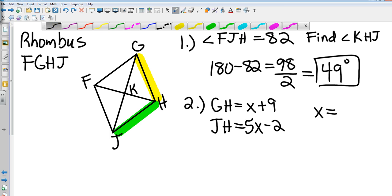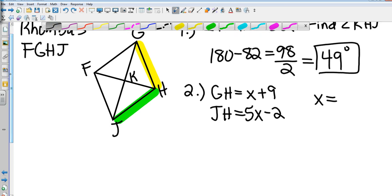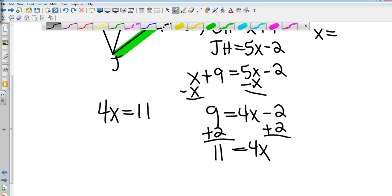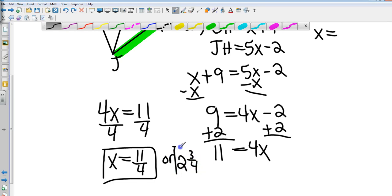So I know because this is a rhombus that all of my sides are congruent. So I'm just going to take x plus 9 and set it equal to 5x minus 2. Subtract that x, giving me 9 equals 4x minus 2. I'm going to add 2 to both sides. So come over here and I've got 4x equals 11. And so now I'm going to divide both sides by 4. And x equals 11 fourths. You can just leave it like that or you can make it 2 and 3 fourths if you would like to. Either one of those would be fine.